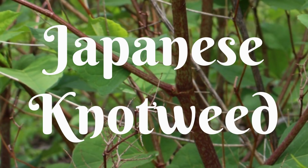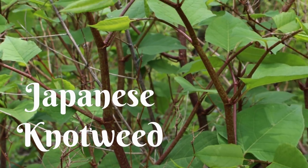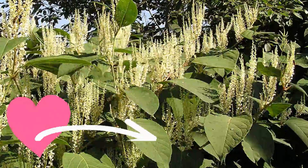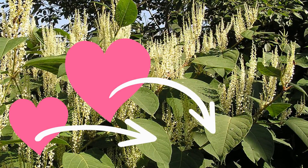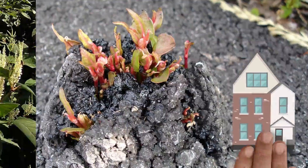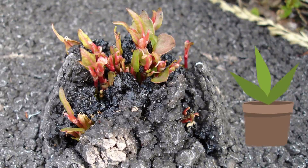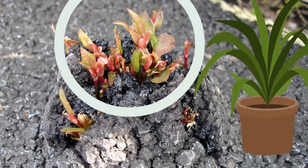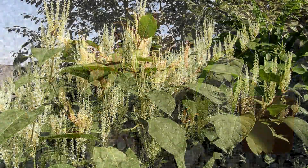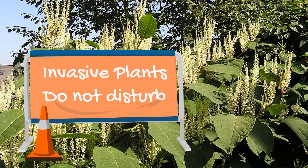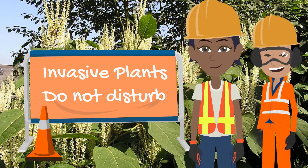Japanese knotweed is a fast-growing, clump-forming plant made up of many reddish-purple stems which mature to green with purple flecks. Its heart- or shovel-shaped leaves are spaced alternately on stems and it has creamy white flowers. It is highly invasive and its roots can cause significant structural damage to buildings. New plants can also sprout from very small pieces of root, making it very hard to get rid of. If you find Japanese knotweed on site, it should be cordoned off immediately and dealt with by trained experts to prevent further spread.